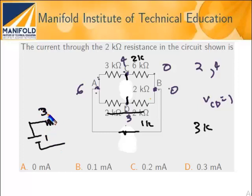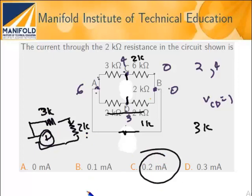This is 3k and you have a load of 2k, and I am supposed to find the current through this 2k, which is 1 divided by 5k, which is 0.2 mA.